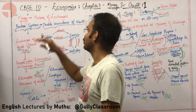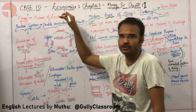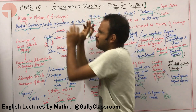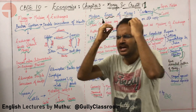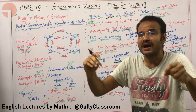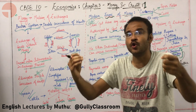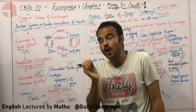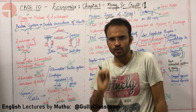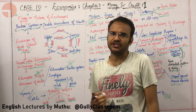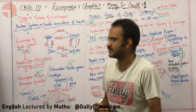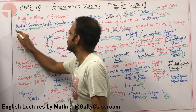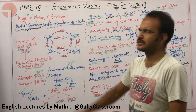Now let us start with what is money and how money is used as a medium of exchange. Before we understand money as a medium of exchange, let us visualize a world where there was no money. In such a world, how are you going to do exchange, product exchange, how are you going to do business? We are going to do business by a system called the barter system.